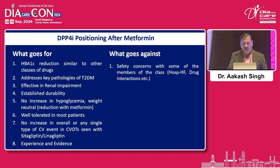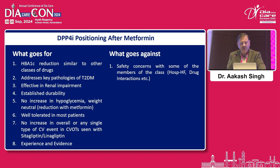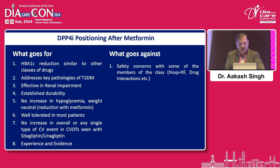DPP-4 inhibitor positioning after metformin — points in favor include HbA1c reduction similar to other drug classes, addressing key pathologies of type 2 diabetes, effectiveness in renal impairment, established durability, no increase in hypoglycemia, weight neutrality, and good tolerability in most patients with no increase in overall or any single type of CV events, as seen with sitagliptin and linagliptin. What goes against is safety concerns with some members for hospitalization for heart failure.